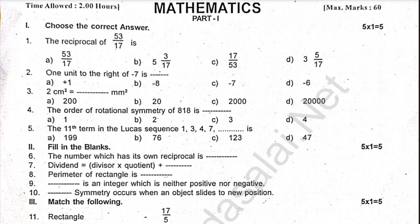The order of rotational symmetry of 8 and 18 is — choose it. The 11th term in the Lucas sequence 1, 3, 4, 7, dash — choose it.